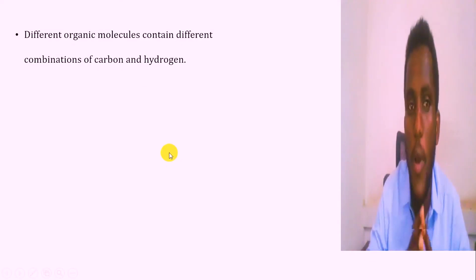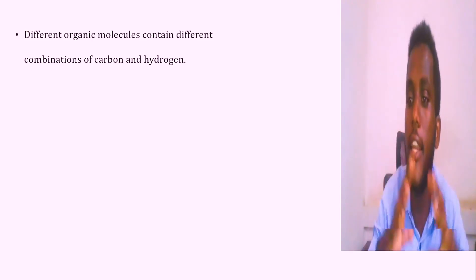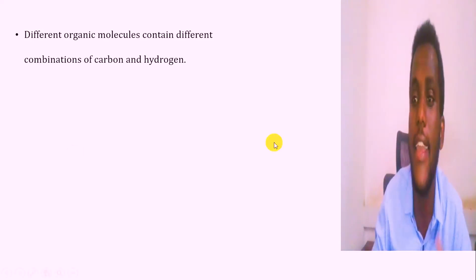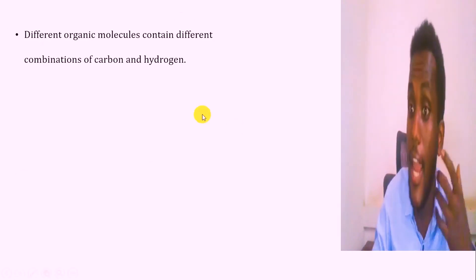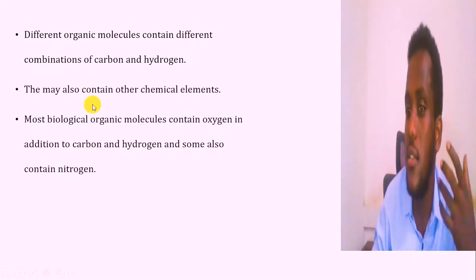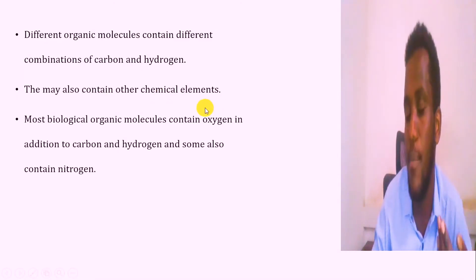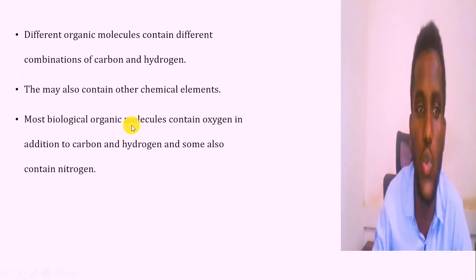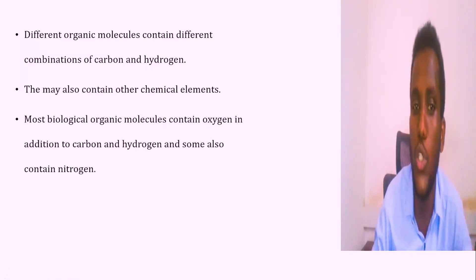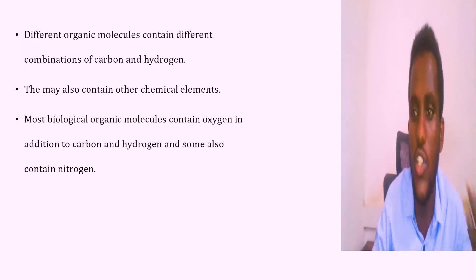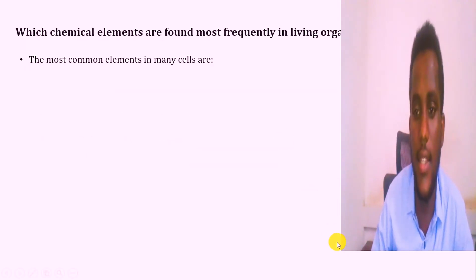If you look at organic molecules, carbon and hydrogen are present simultaneously, and you can see their ratio in the structure. In addition to carbon and hydrogen, organic molecules may also consist of other elements such as sulfur, nitrogen, phosphorus, and oxygen.